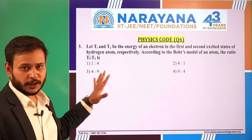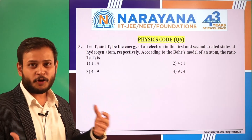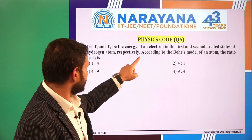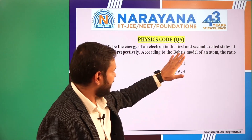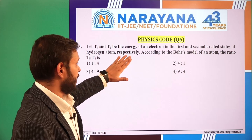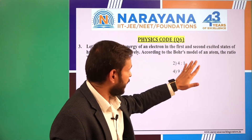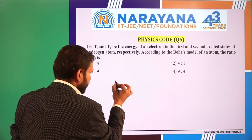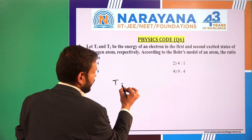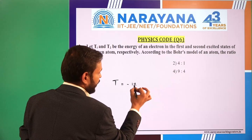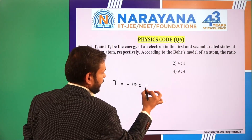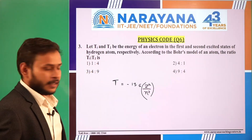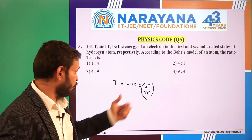This question is from modern physics — a direct formula-based question. Let T1 and T2 be the energy of an electron in the first and second excited states of a hydrogen atom respectively. According to Bohr's model, the ratio T1 to T2 is... We know that the total energy T equals minus 13.6 times Z² by N², in electron volts.